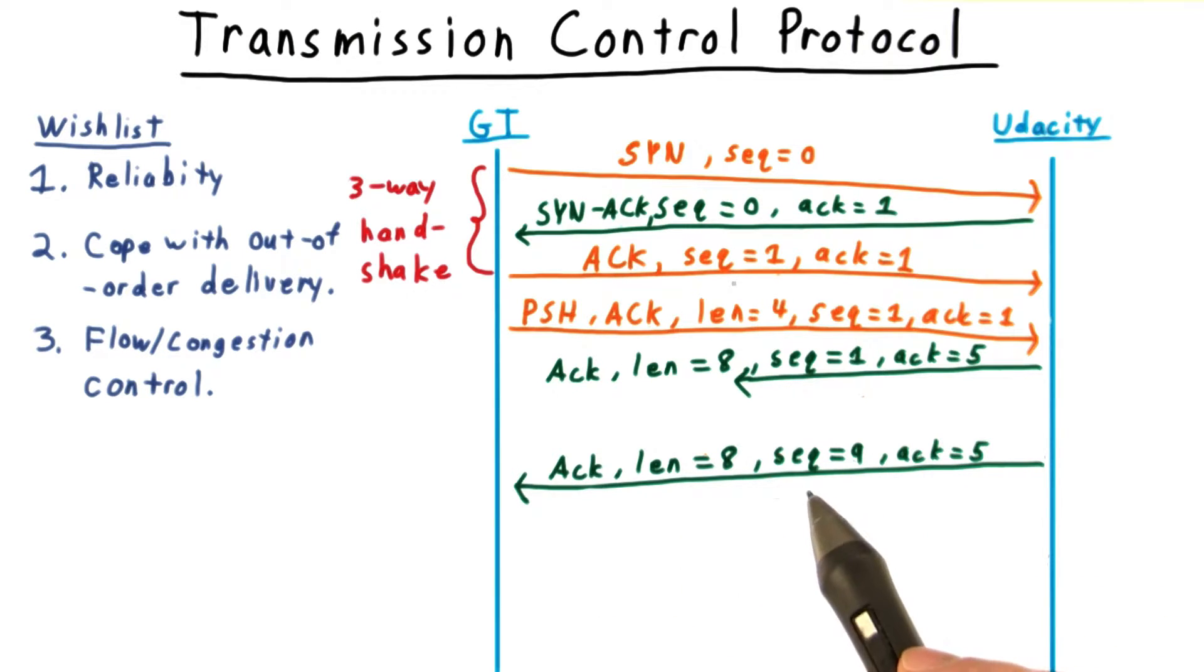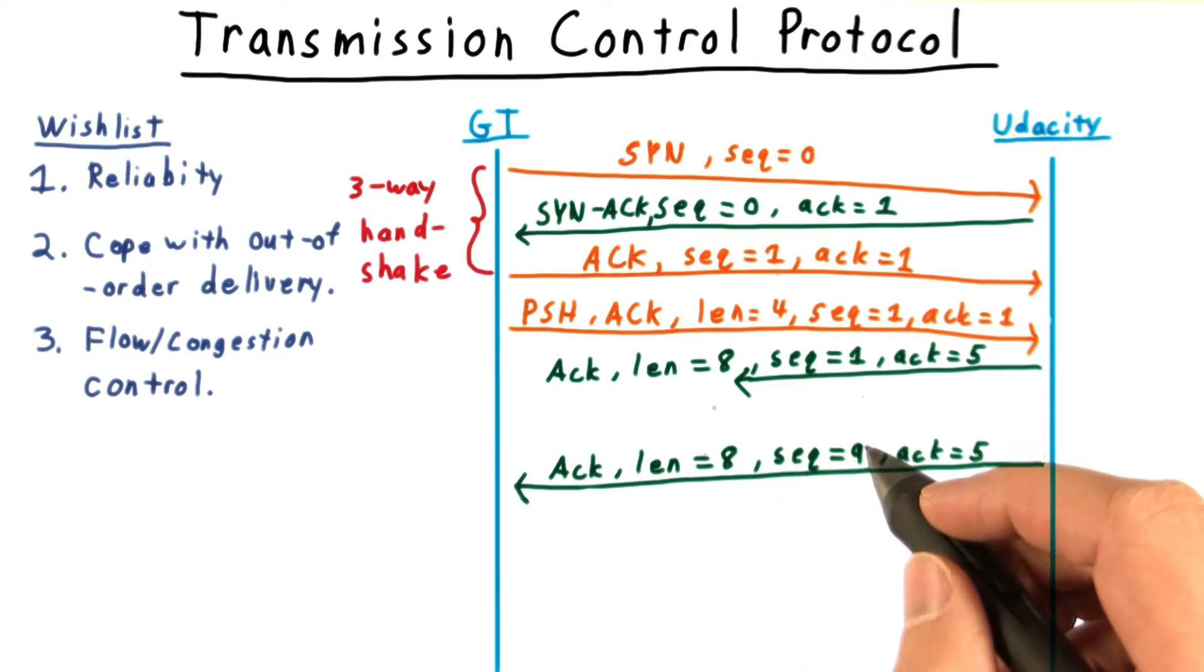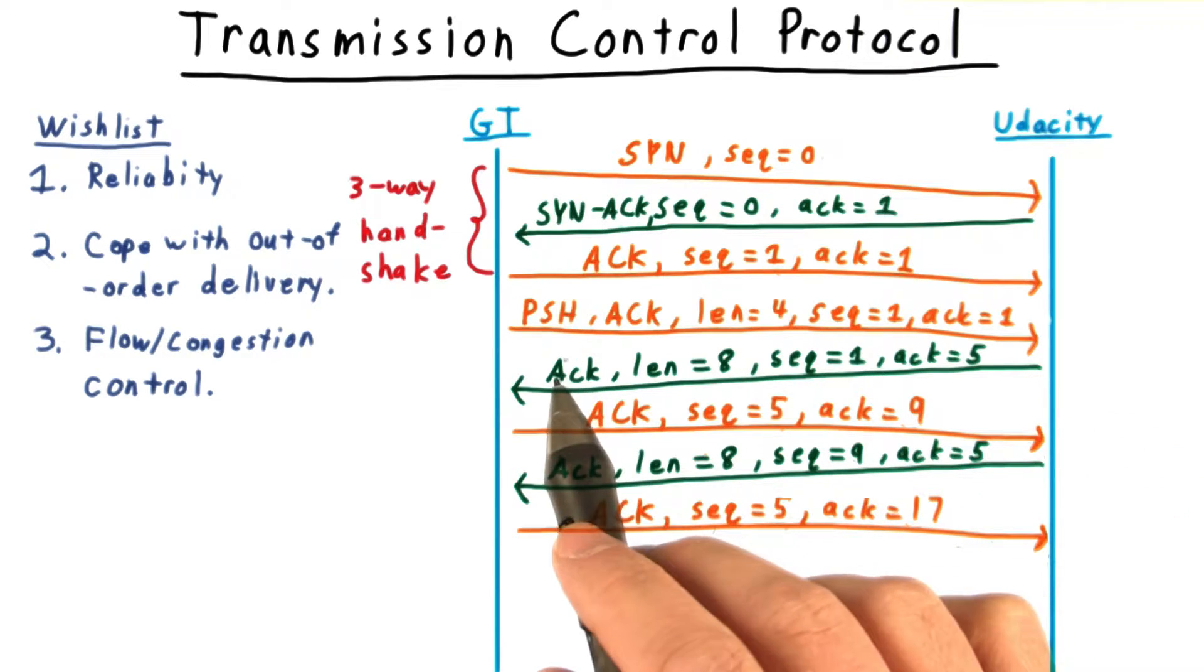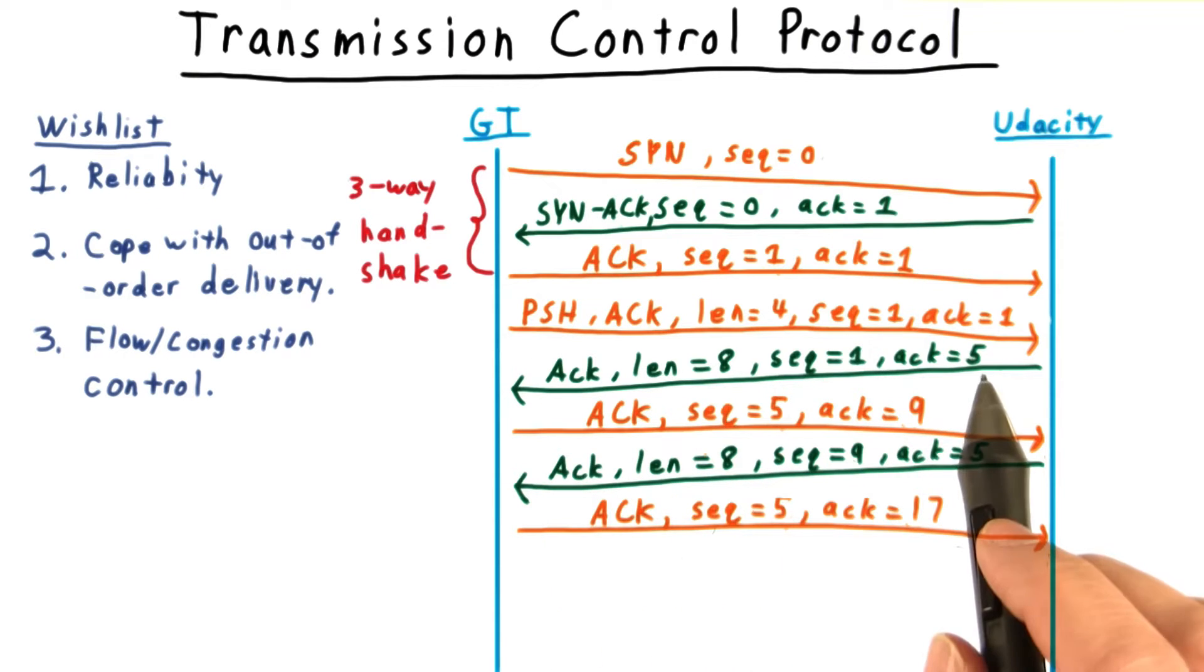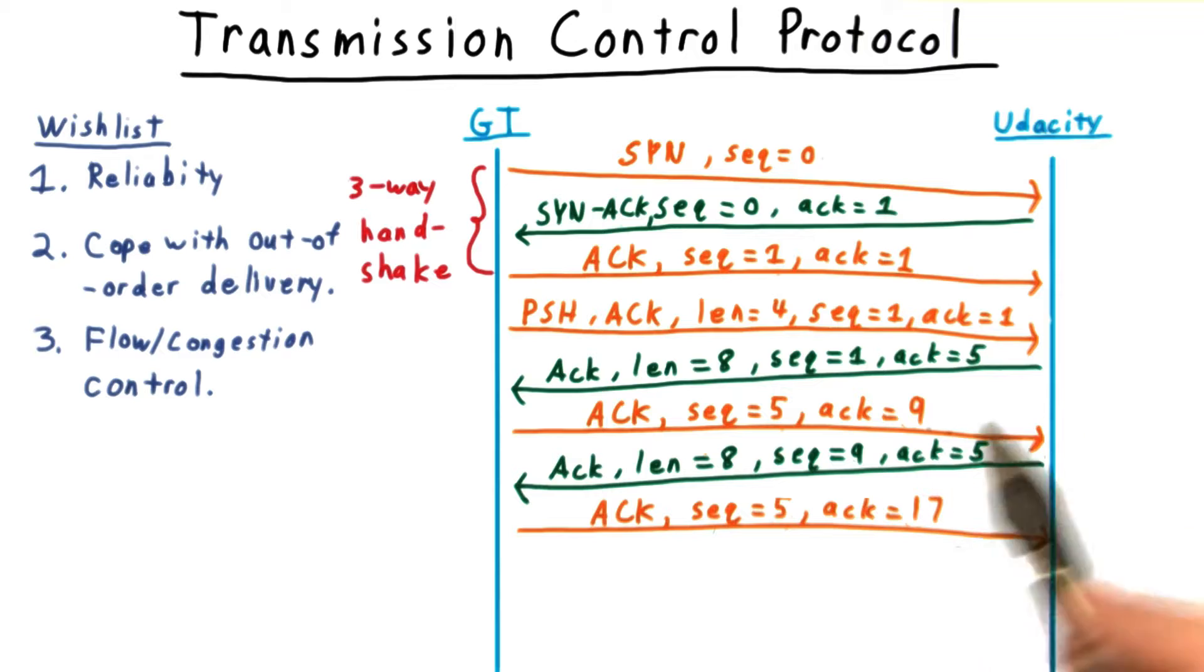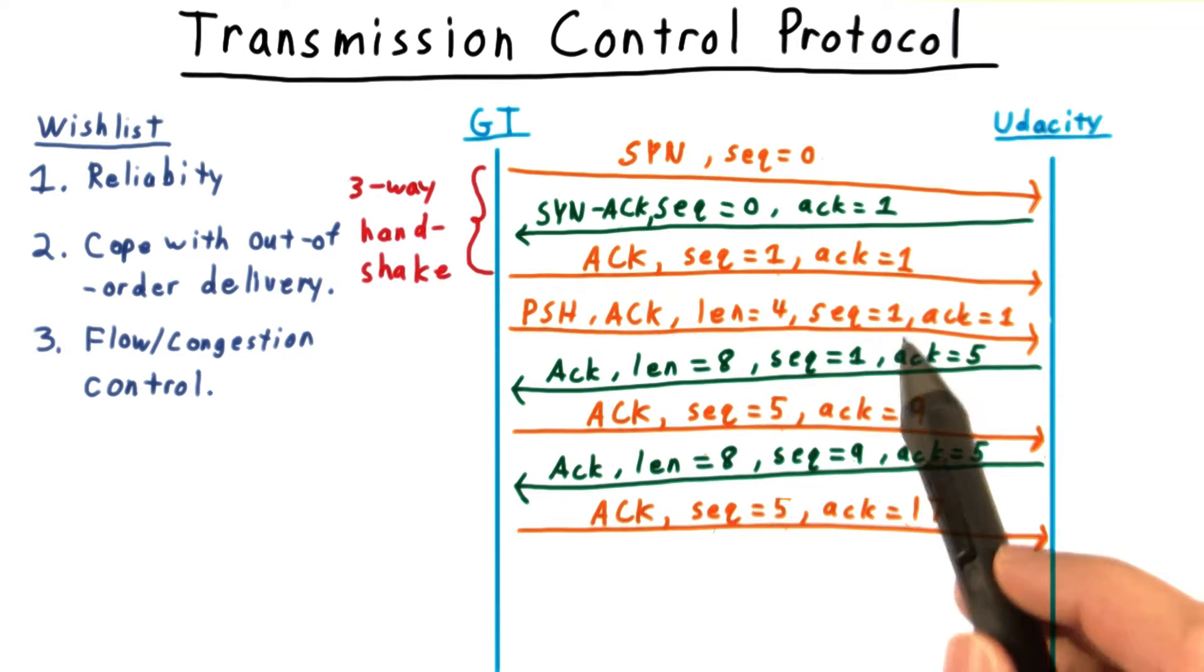You might think that GT would send a packet saying, could you resend that please? But actually, the system works by positive acknowledgements instead of requests for retransmission. If the packet had gone through, the traffic should have looked like this. So even though GT doesn't really have anything to say to Udacity, he should have been sending empty acknowledgement packets to Udacity, indicating that the packets were received.